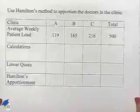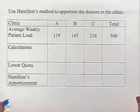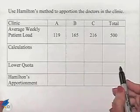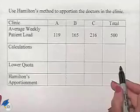Well, let's use Hamilton's method to apportion the doctors in the clinic, and we're going to do that by filling in this chart. To begin with, we're going to have to come up with a new standard divisor.